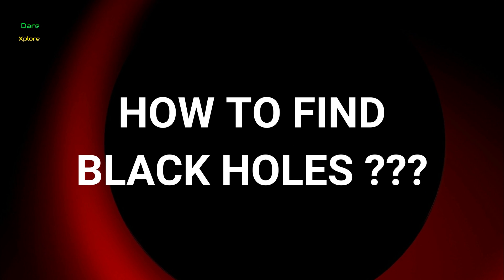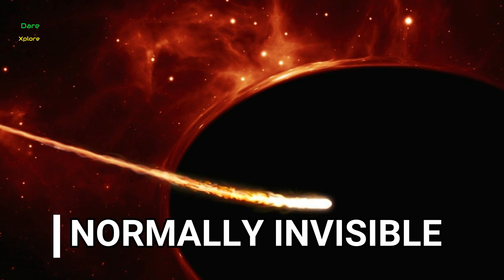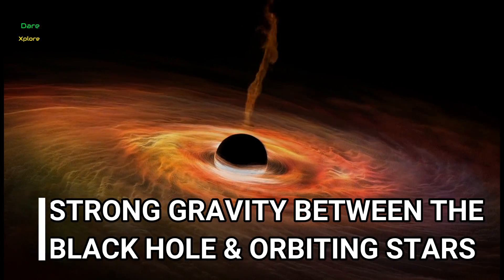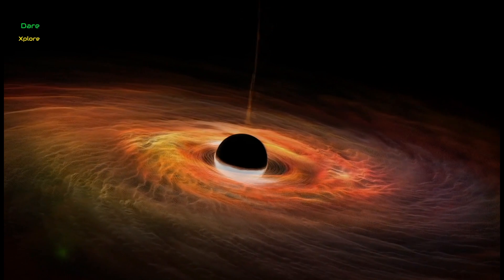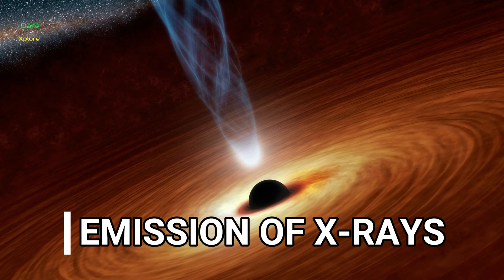If black holes are black, how do we find them? As light cannot escape from black holes, black holes cannot be seen normally. But scientists can find them by observing the strong gravity of the stars orbiting the black holes. Electromagnetic radiation, mainly X-rays, emitted from black holes may be detected by telescopes.